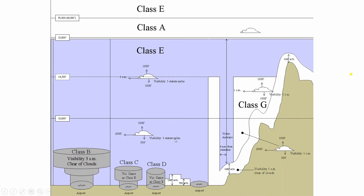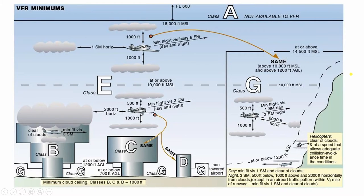Another view of Class E: below 10,000 feet — 152 rule, three statute miles visibility. Above 10,000 feet — one prime rule: 1,000 feet above, 1,000 feet below the cloud, one statute mile away, five miles visibility. A diagram shows a plane in Class E: 500 feet below a cloud, 1,000 feet above, 2,000 feet horizontally, three statute miles — legal. Then above 10,000 feet it switches to the one prime rule and five statute miles.